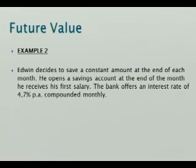Let's read. Edwin decides to save a constant amount at the end of each month. He opens a saving account at the end of the month he receives his first salary. This is quite a disciplined guy, because he is immediately, after he gets his first salary, starting to save. The bank offers an interest rate of 4.7% per annum, compounded monthly.